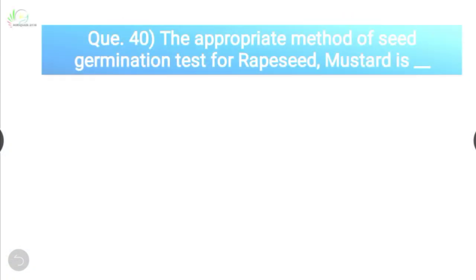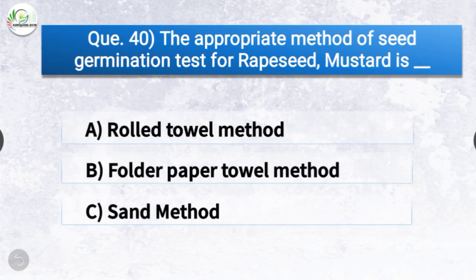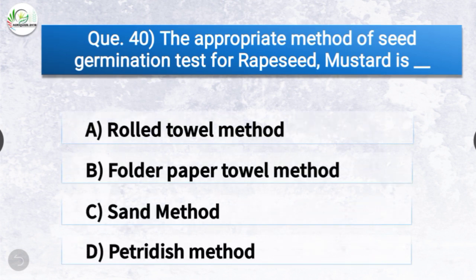Question number forty: The appropriate method of seed germination test for rapeseed mustard is — the options are rolled towel method, folded paper towel method, sand method, or petri dish method. The correct answer is option D — petri dish method. The appropriate method of seed germination test for rapeseed mustard is the petri dish method.